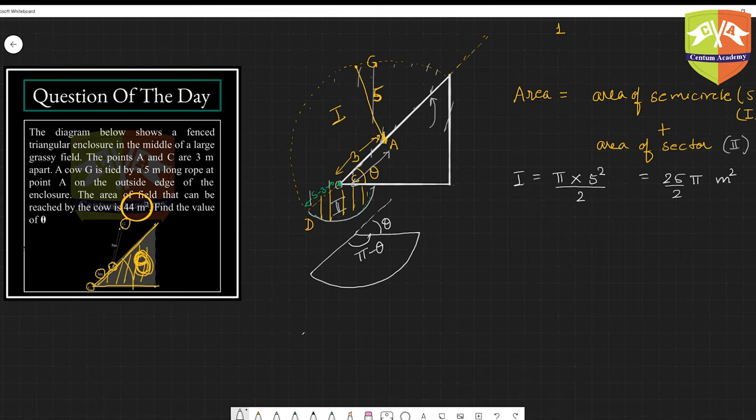What is the area of the sector? If you recall the formula, it is angle of sector divided by 2π. The angle of sector has to be in radians - angle of sector divided by 2π into π into r square, full circle area.